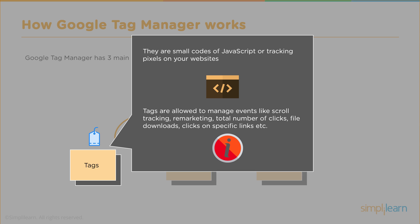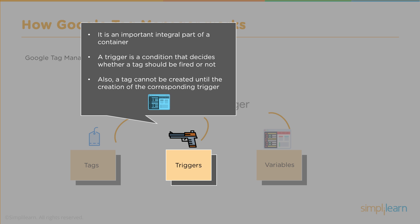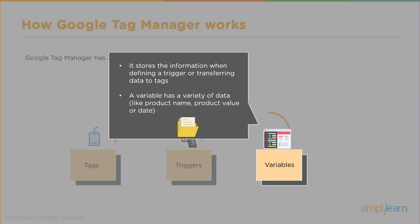Tags are small snippets of JavaScript or tracking pixels that manage events like scroll tracking, remarketing, clicks, downloads, file plays, and clicks on external links. For example, if someone clicks a Facebook icon on your site and you want to track that, you create a tag. The trigger fires under a certain condition — like if the URL equals facebook.com. A tag cannot be created without a corresponding trigger, otherwise it will never fire.